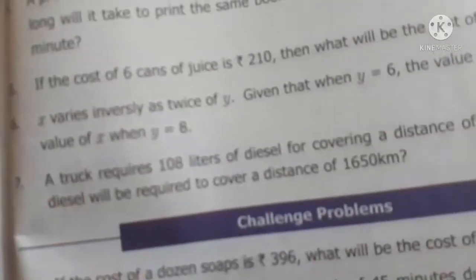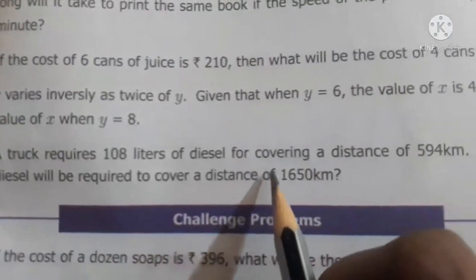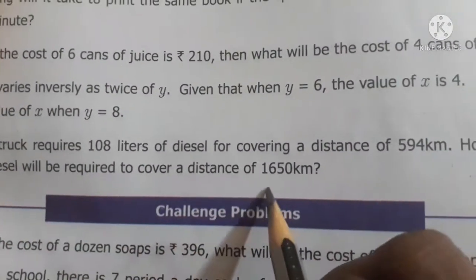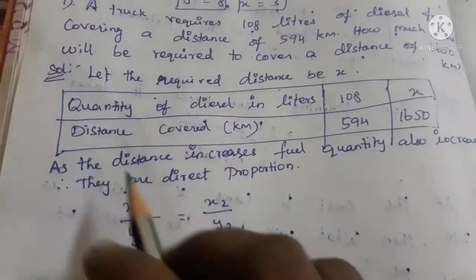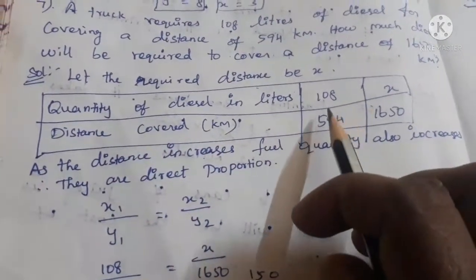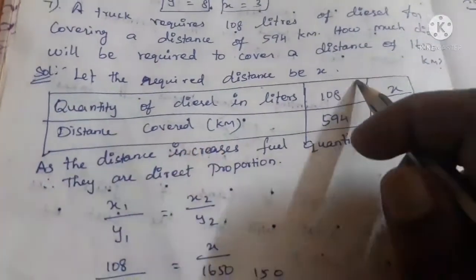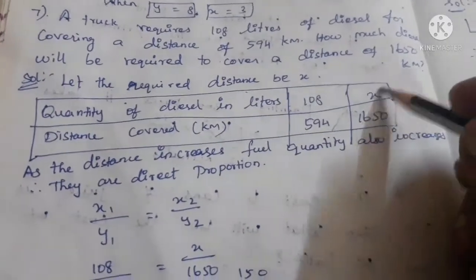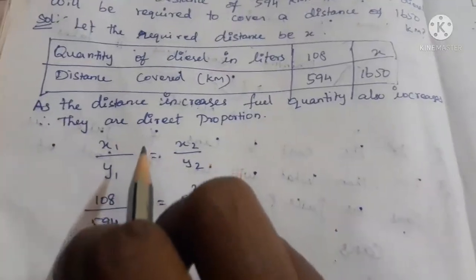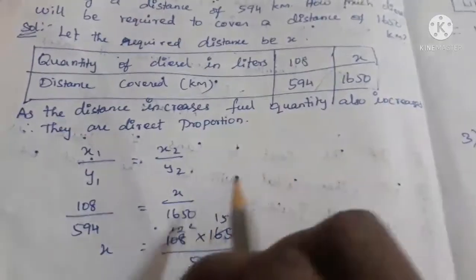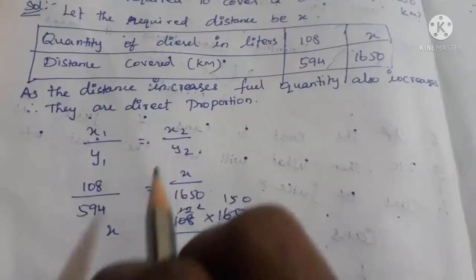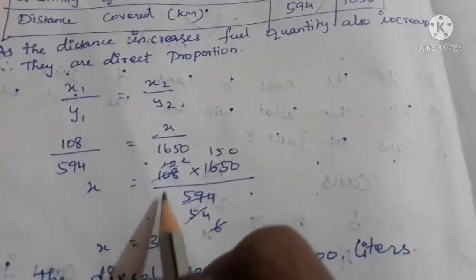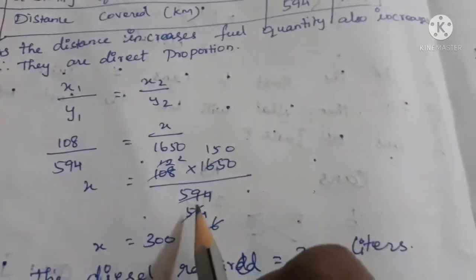We are going to the 7th sum. A truck requires 108 litres of diesel for covering a distance of 594 km. How much diesel will be required to cover a distance of 1650 km? As the distance increases, fuel quantity also increases - they are in direct proportion. So using x1 by y1 = x2 by y2: 108 by 594 = x by 1650. So x = 108 into 1650 divided by 594.